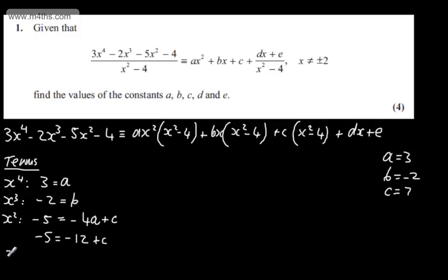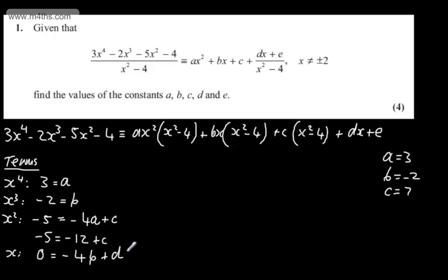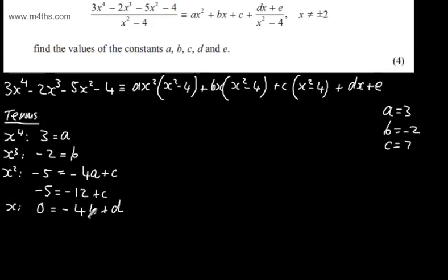If we now look at terms in x: on the left hand side we've got none, so we write 0. On the right hand side we'll have minus 4b plus d. We already know that b is minus 2, so 0 equals 8 plus d, which gives us d equals minus 8.